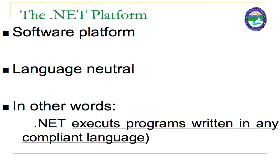.NET has a software framework platform and it is language neutral. .NET executes programs written in any compliant language. The most important feature of .NET is language interoperability — it supports more than 50 languages. The previous languages only work on a single language, but .NET supports many languages, which are called .NET compliant languages.